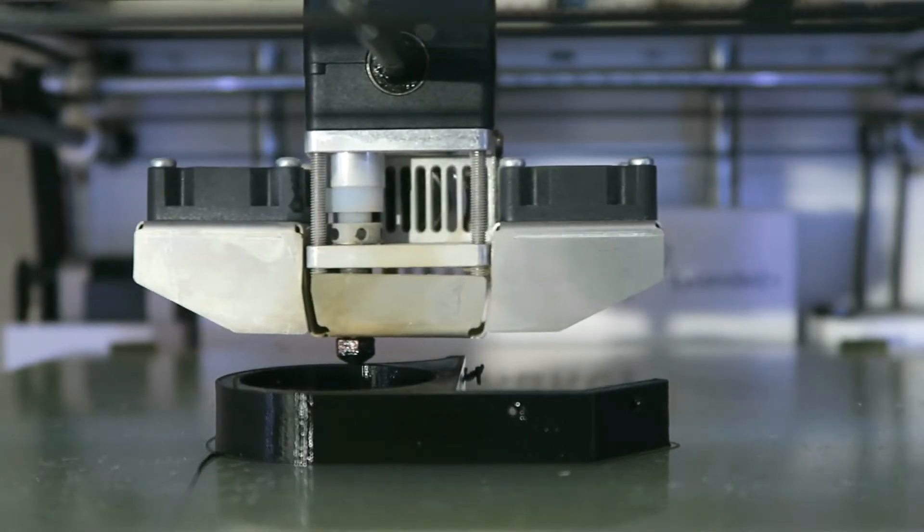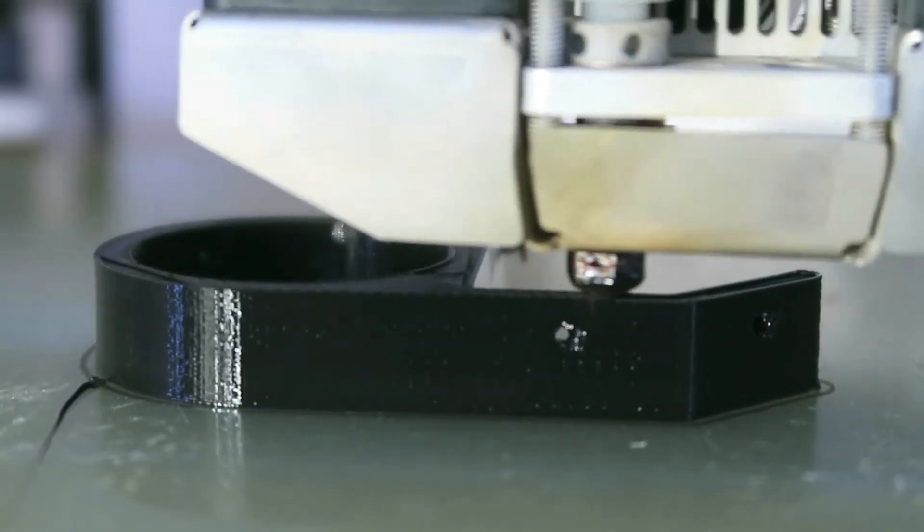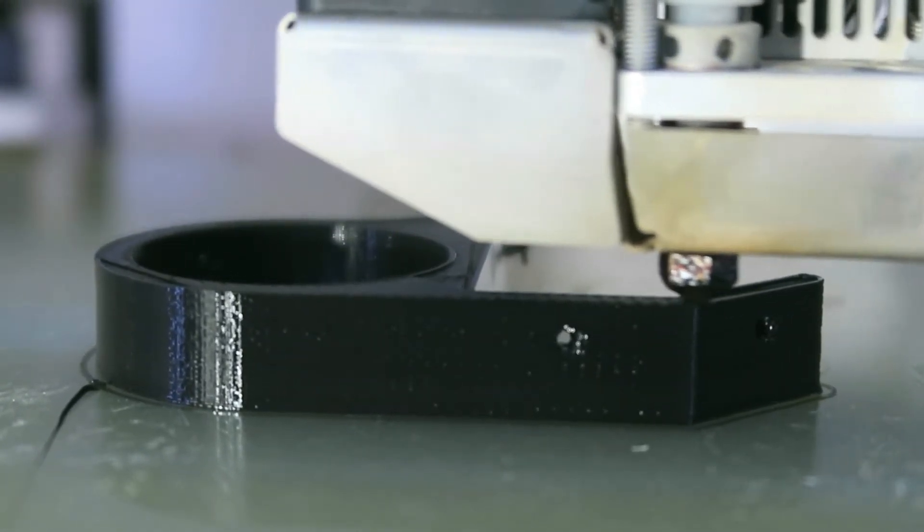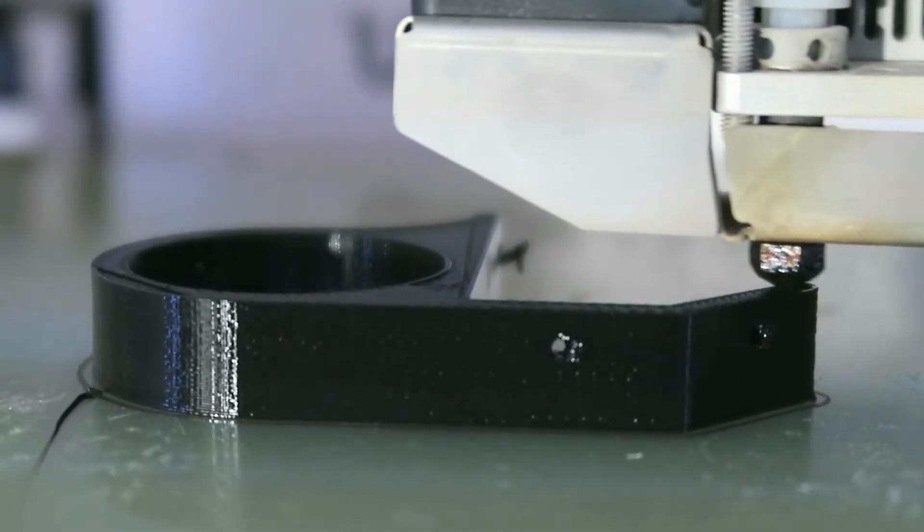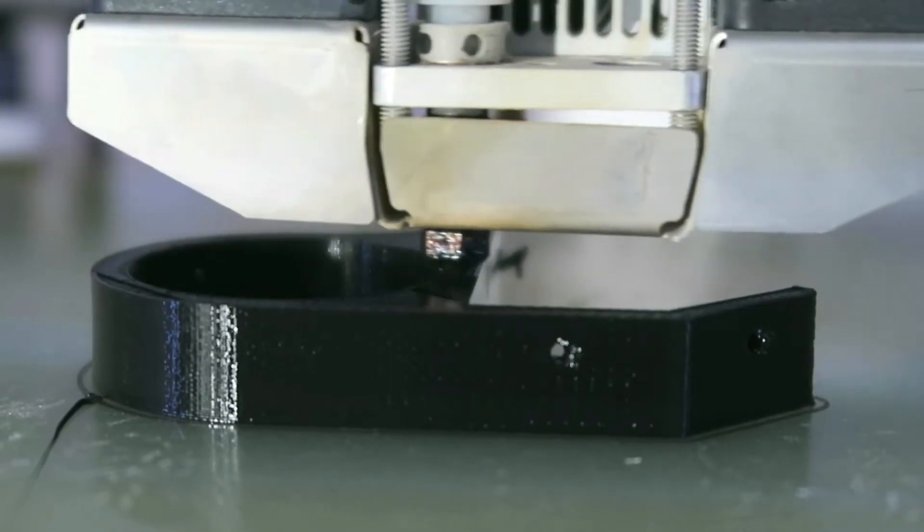My infill is at 100% since the thing being printed is going to be structural. I sped things up with a big 0.6 nozzle and 0.25 layer height. This is a simple shape, side to side and vertically, so finer resolution wouldn't really matter.